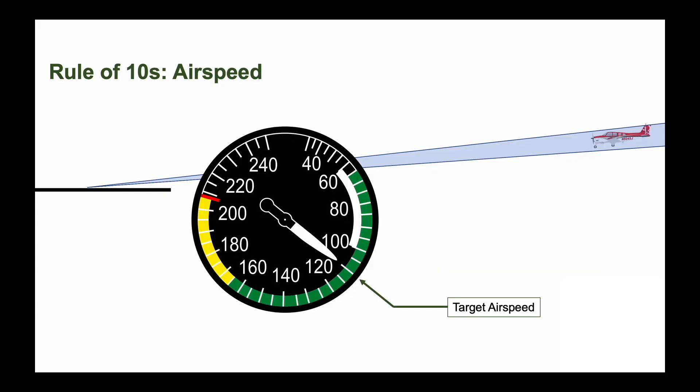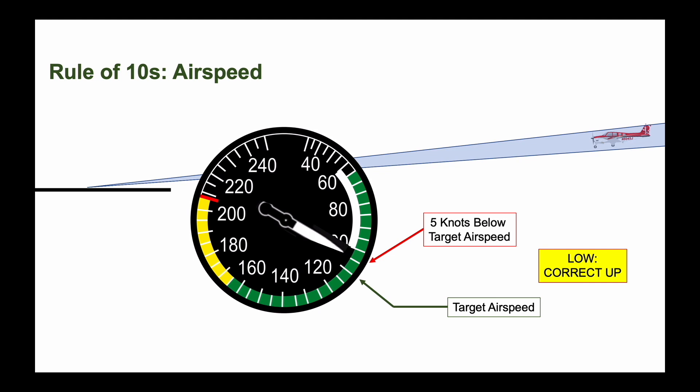There is also a rule of 10s for airspeed. From your target by the numbers airspeed, if you find yourself low and needing to correct up, raise the nose or increase power slightly, but do not allow the airspeed to decrease more than 5 knots below your target. Any slower, and the now mistrimmed airplane will fight your attempts to remain smooth and stabilized.